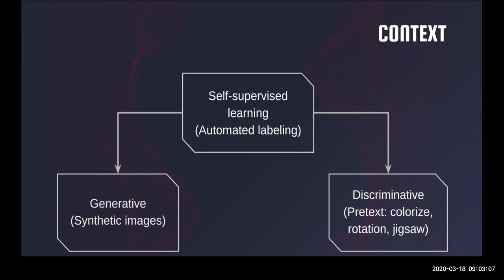Generally, self-supervised learning approaches tend to fall into one of two families. On one side, you have the generative approaches, where we try to generate synthetic images to use as additional data to train the model. On the other side, we have the discriminative approaches, which usually involve a pretext task such as training the model to colorize black and white images, predict rotation degree, or solve a jigsaw puzzle. We hope that the knowledge learned solving the pretext task can later be transferred into downstream tasks like classification or object detection.